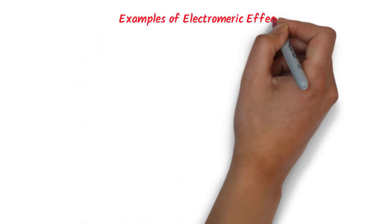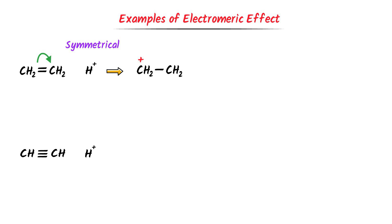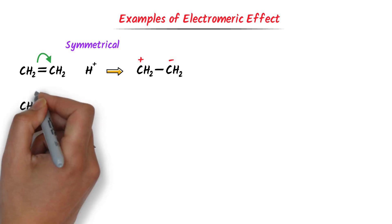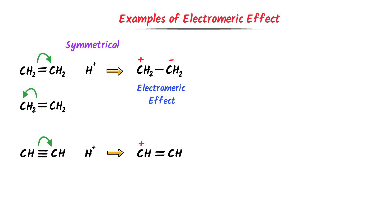Now let me show some examples of electromeric effect. Consider these symmetrical molecules with a double bond containing pi electrons. In the presence of an attacking reagent, these pi electrons will shift to one carbon, causing a positive charge on that carbon and a negative charge on the other. There is also the possibility that the pi electrons shift to the opposite carbon. Similarly, in a second symmetrical molecule, the pi electrons can shift in either direction, producing opposite charges on each carbon. Thus, electromeric effect is observed in both of these organic compounds.